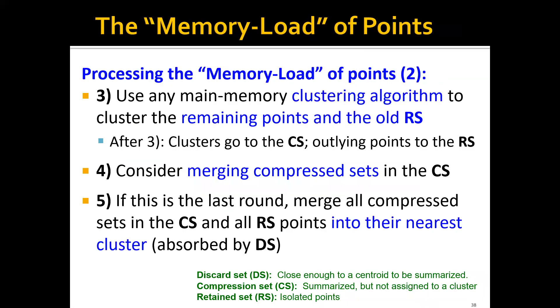In the third step, we'll use any main-memory clustering algorithm to cluster the remaining points and the old RS - cluster the endpoints in the CS and endpoints in the RS. After step three, we will have new mini clusters which will be going to CS, and some outlying points which will be going to the RS. In the fourth step, we can consider merging the compressed sets in the CS. We can repeat step one to step four for multiple rounds. And if this is the last round, then we'll have step five, which is to merge all the compressed set in the CS and all RS points into their nearest cluster. In the last round, we have no choice but to just merge all the points in the CS and RS into DS.